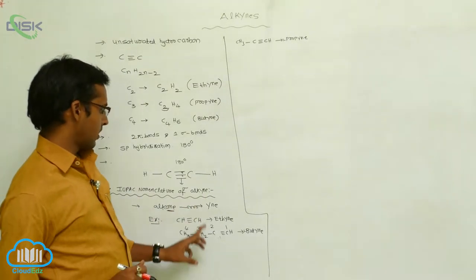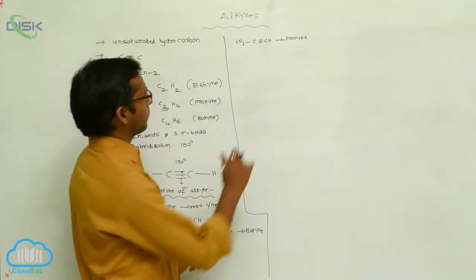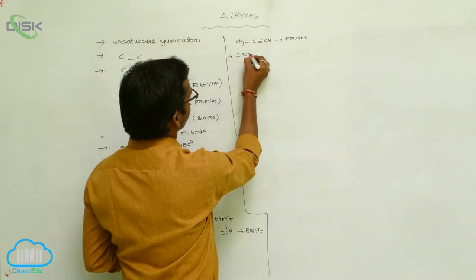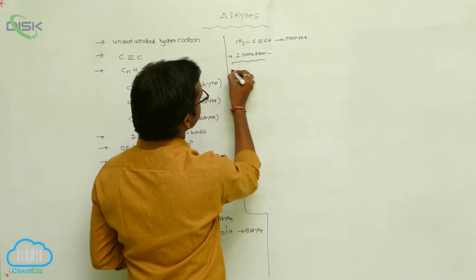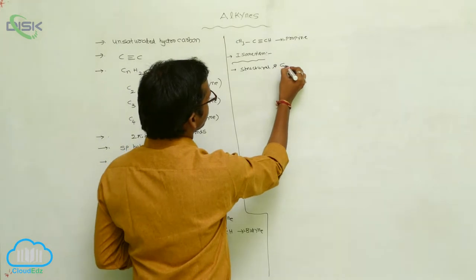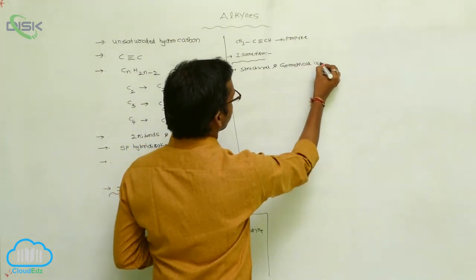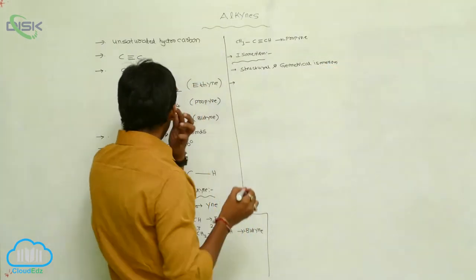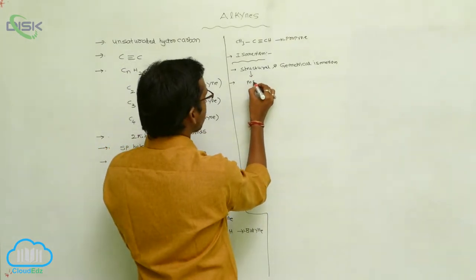So now, alkynes in nomenclature of alkane - in that N is replaced with iron. So now we apply it for the next one, isomerism. Generally, all alkynes exhibit structural isomerism, structural and geometrical isomerism. In that structural isomerism, it is generally explained - it exhibits position isomerism.